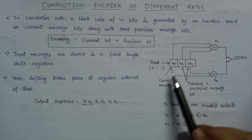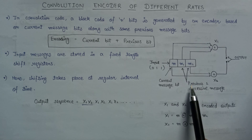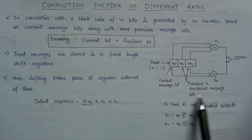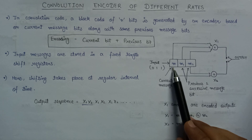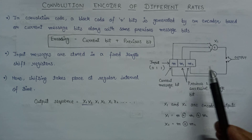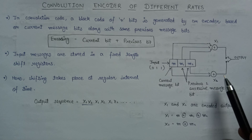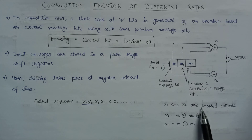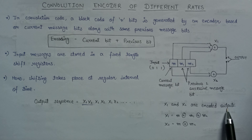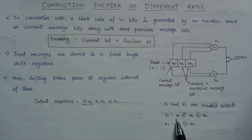Here M is denoting the current message bit whereas M1 and M2 are denoting the previous two successive message bits. On the value of these three shift registers — M, M1, and M2 — the value of X1 and X2 is evaluated. Here X1 and X2 are known as encoded outputs. The expression for the calculation of X1 is equal to M XOR M1 XOR M2.